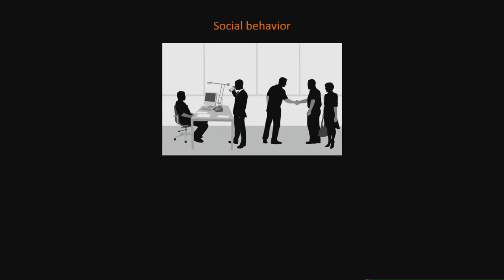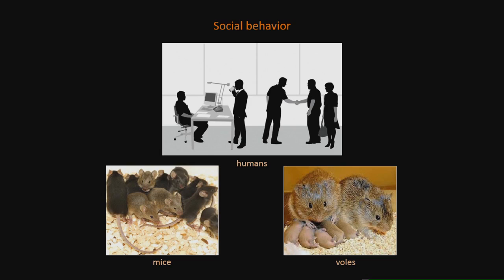GWAS studies have had limited success in identifying genetic regions associated with differences in social behavior among human populations. Folks have also been studying this in model systems like laboratory mice, which have a wealth of genetic tools. But the limitation is that differences among divergent inbred strains are not that large in social behaviors. As a complement, folks have turned to non-model systems like voles, which have extreme differences in affiliative behavior — but those species are highly divergent and no longer interfertile, limiting forward genetics.